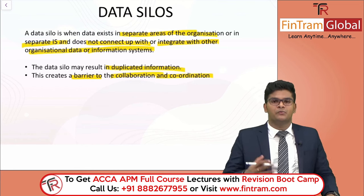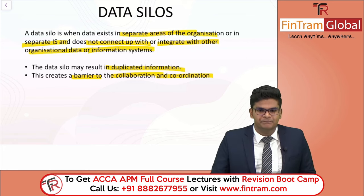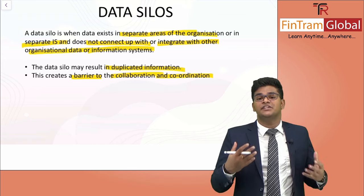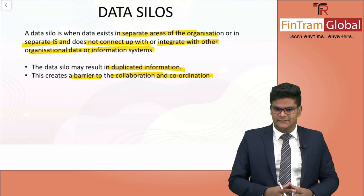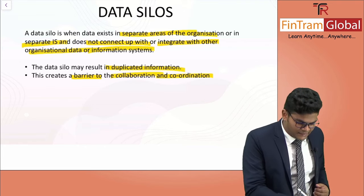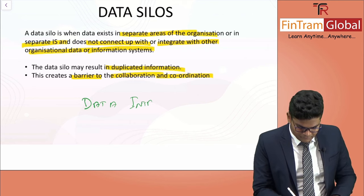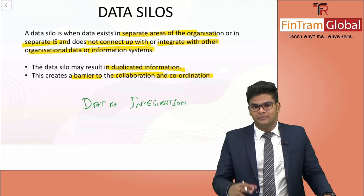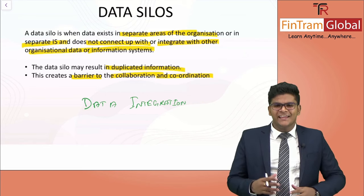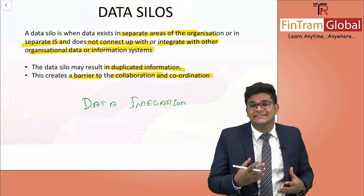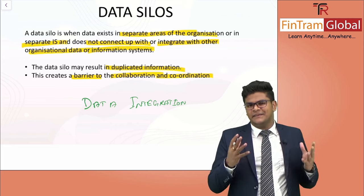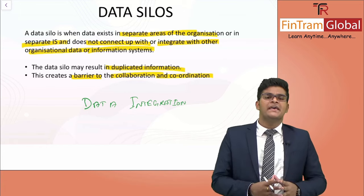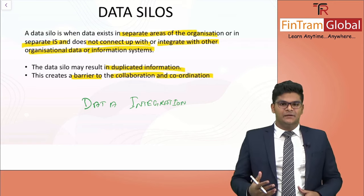We've identified a problem — now let's look at the solution. How can we prevent data silos from occurring within the organization? It's a simple solution: we just have to introduce cloud storage technology or a unified corporate database within the organization. In other words, there should be data integration so that the right team can get the right information at the right time and use it appropriately. Data integration means integrating the data into a single database so that everyone has access to it, using IT technologies such as cloud storage or a unified corporate database.